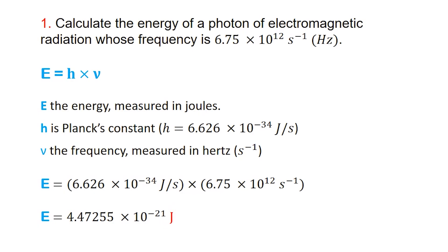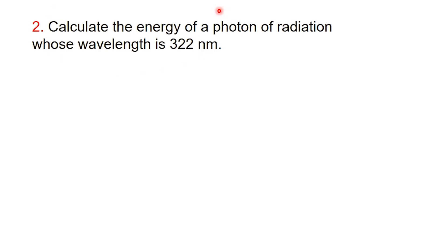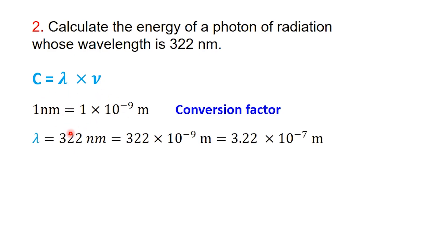Now that we've seen how to find the energy when the frequency is given, let's move to a slightly different situation. This time we're given the wavelength, and we'll need to find the energy of the photon from that. Because the speed of light equation works with meters, not nanometers, we must first convert. 1 nanometer is 1 times 10 to the minus 9 meters. So, 322 nanometers becomes lambda equals 322 times 10 to the minus 9 meters, or 3.22 times 10 to the minus 7 meters.